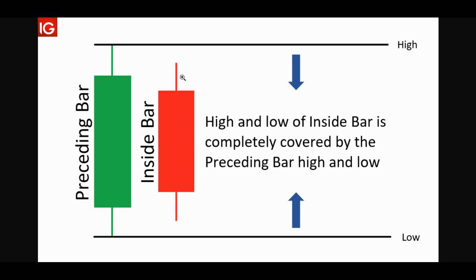You could look at it this way: this bar is completely inside of this one. If there is no upper wick, just use the top of the body. And if there's no lower wick, just use the bottom of the body. That's all you need to decide whether it's completely engulfed by the preceding candle or bar. It's really simple.